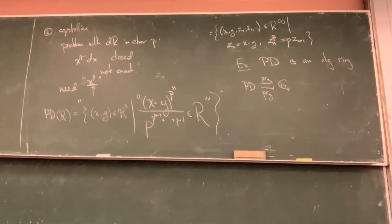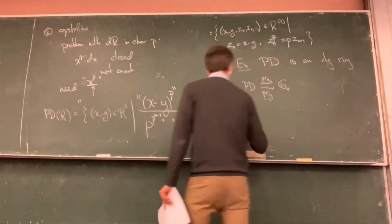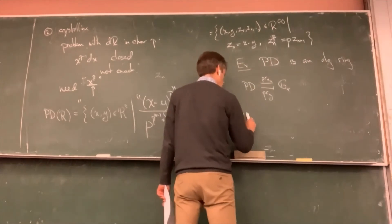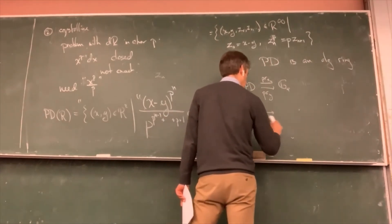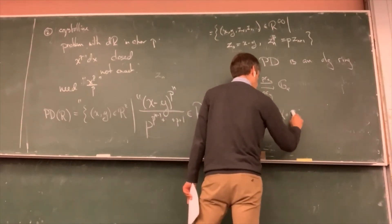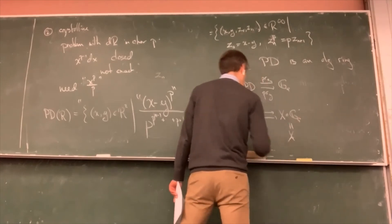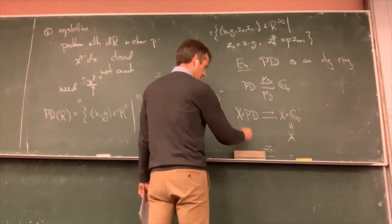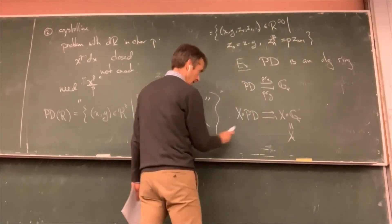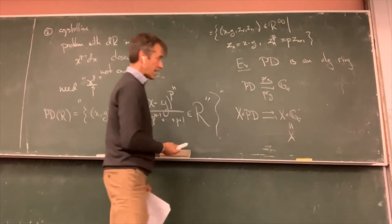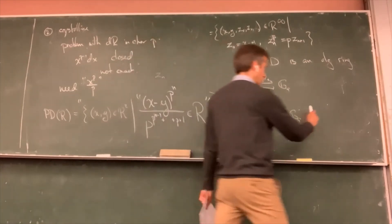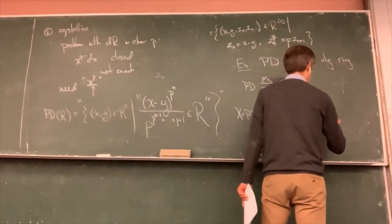PD(R) is a ring — the ring operations are given component-wise with respect to x and y, and to work out the operations for the z's you use certain formulas and cancel out the p's. We have two projections — the projection onto the x component and the projection onto the y component — both ring homomorphisms. Then you apply the same game as before: pre-compose your variety with the two algebraic rings.